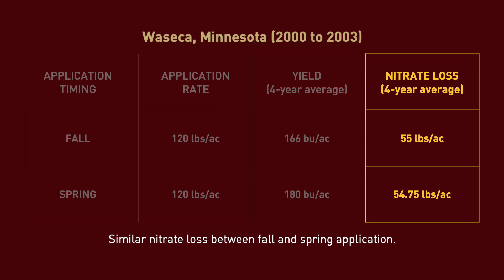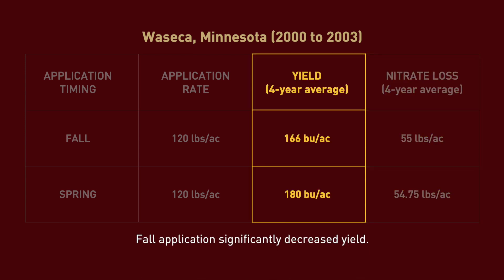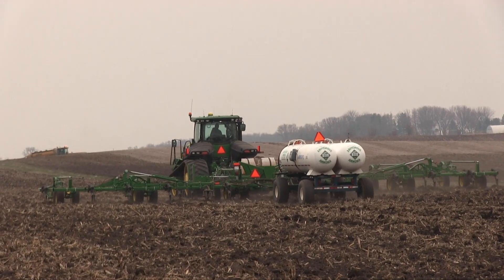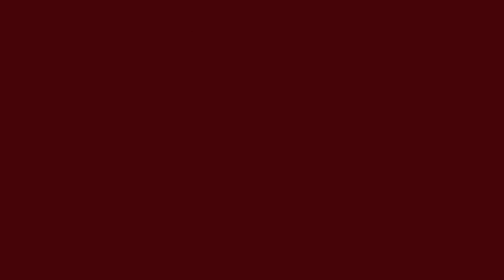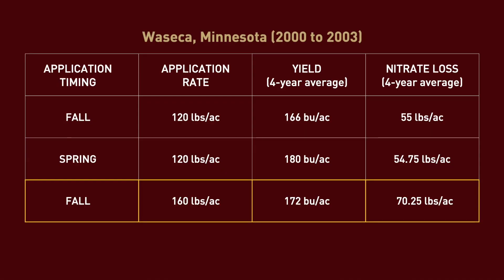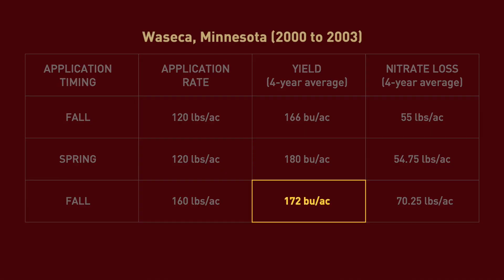You can see that nitrate loss is similar between spring application and fall application using a nitrification inhibitor. However, yields are higher with a spring application. This is likely because some of the fall-applied N is lost through denitrification to the atmosphere. This study also shows that applying above recommended rates of fall N can increase yield, but still isn't as good as the spring-applied BMP rate.